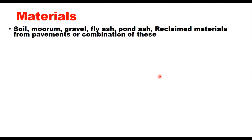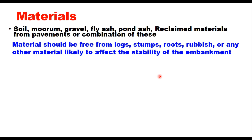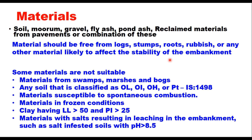mooram, gravel, fly ash, pond ash, reclaimed materials from pavements, or it may be a combination of all these. But the material should be free from rocks, stumps, roots, rubbish or any other material likely to affect the stability of the embankment.